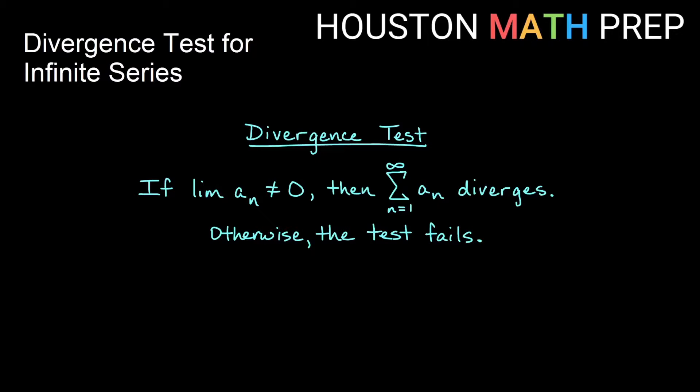So the divergence test is super short to state. It basically says that if the limit of the terms in your series is not zero, then the sum of the terms will diverge. Now this divergence test cannot tell you if it converges, it can only tell you if it diverges.